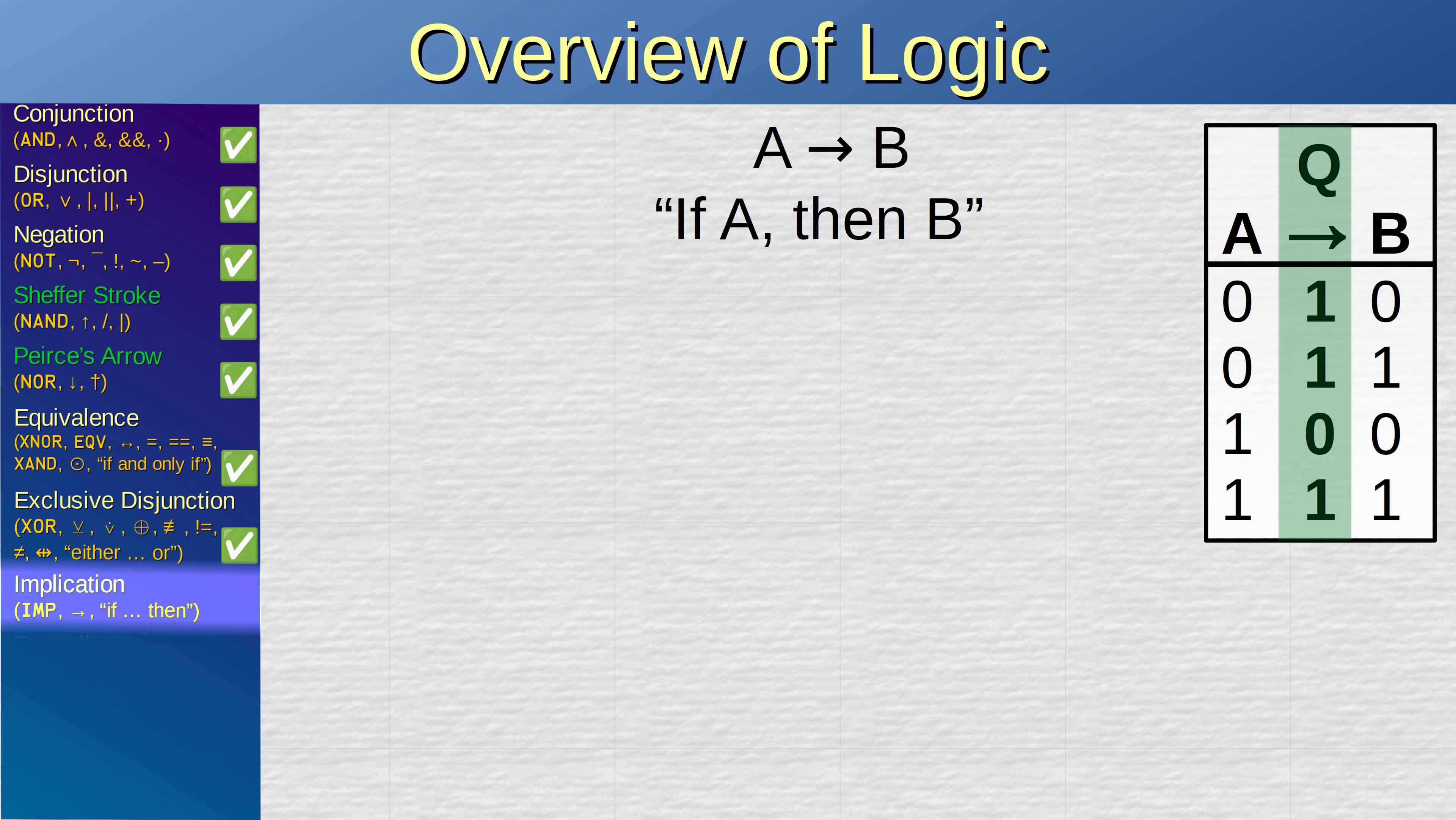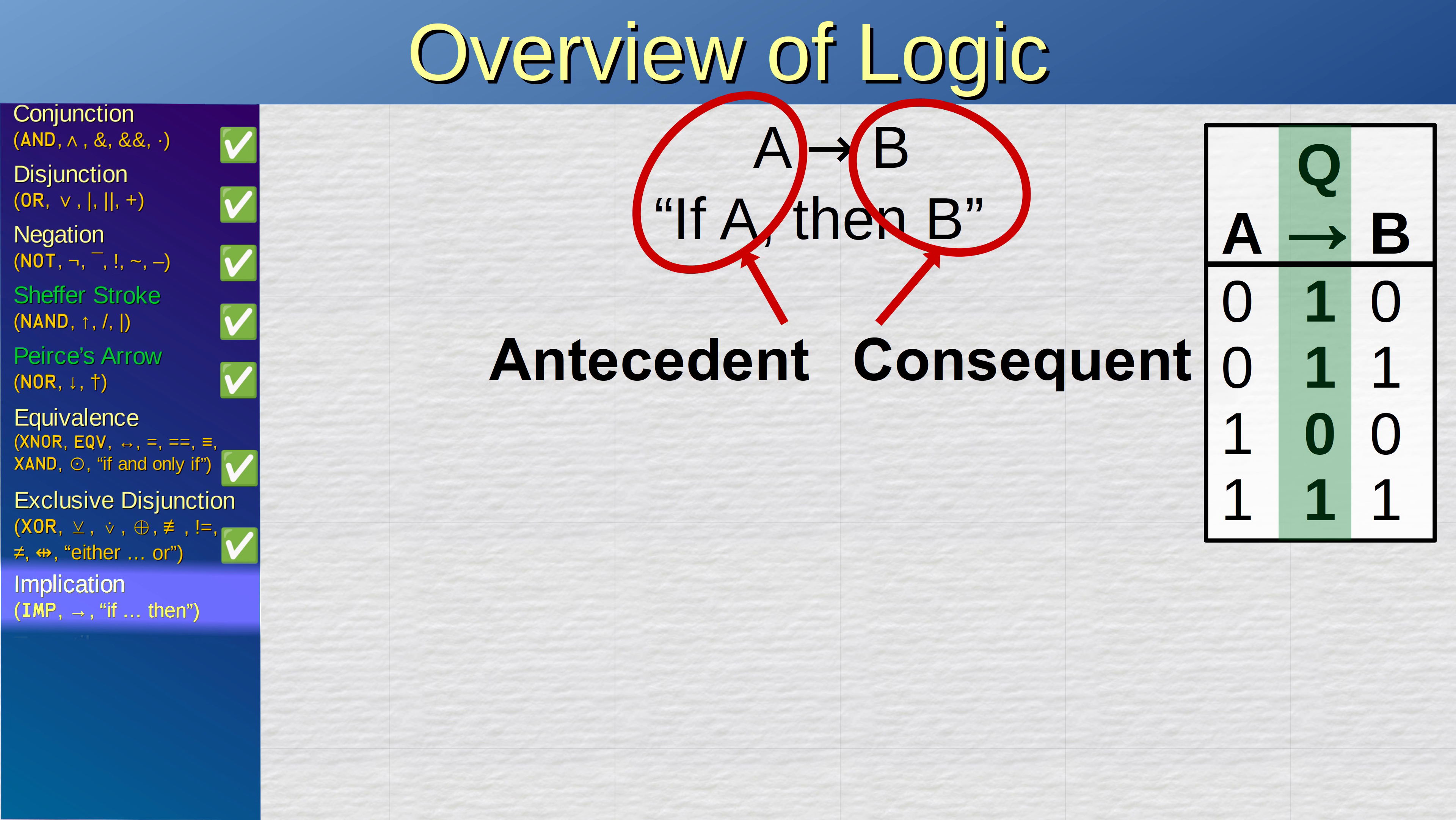The material implication is a very important concept when logic meets philosophy. And there is even a special name for the two components of this proposition. The first half of the proposition is called an antecedent, and the second half is called the consequent. Antecedent is the premise, and the consequent is the conclusion. The implication can be expressed as a disjunction between the consequent and the negation of the antecedent.